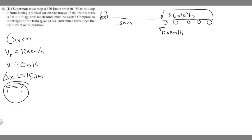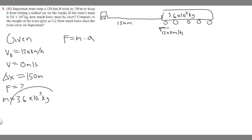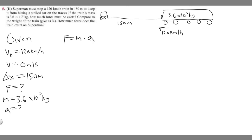We know that force equals mass times acceleration. I forgot to write down the mass of the train — mass equals 3.6 times 10 to the 5th kg. So we have the mass, and if we want to find force we also need to find acceleration. They don't give us acceleration, so we're going to have to solve for that too.